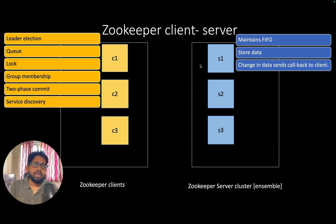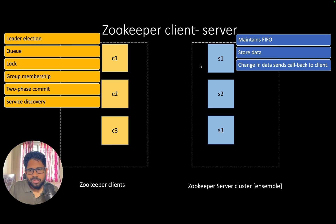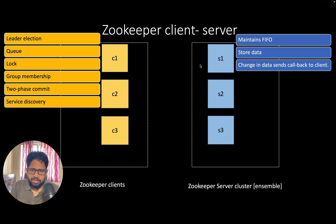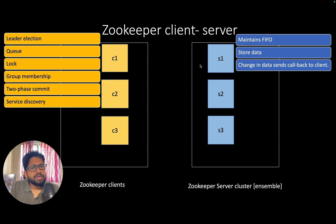People who have used Apache Kafka might say this sounds similar to what Kafka solves — FIFO and queue subscriptions. But guess what? Apache Kafka also uses ZooKeeper under the hood. In the latest versions they are trying to move away from it, but for most of its history Kafka has relied on ZooKeeper. There are many more problem statements that ZooKeeper solves, and we'll see and implement each of those solutions in the coming videos.